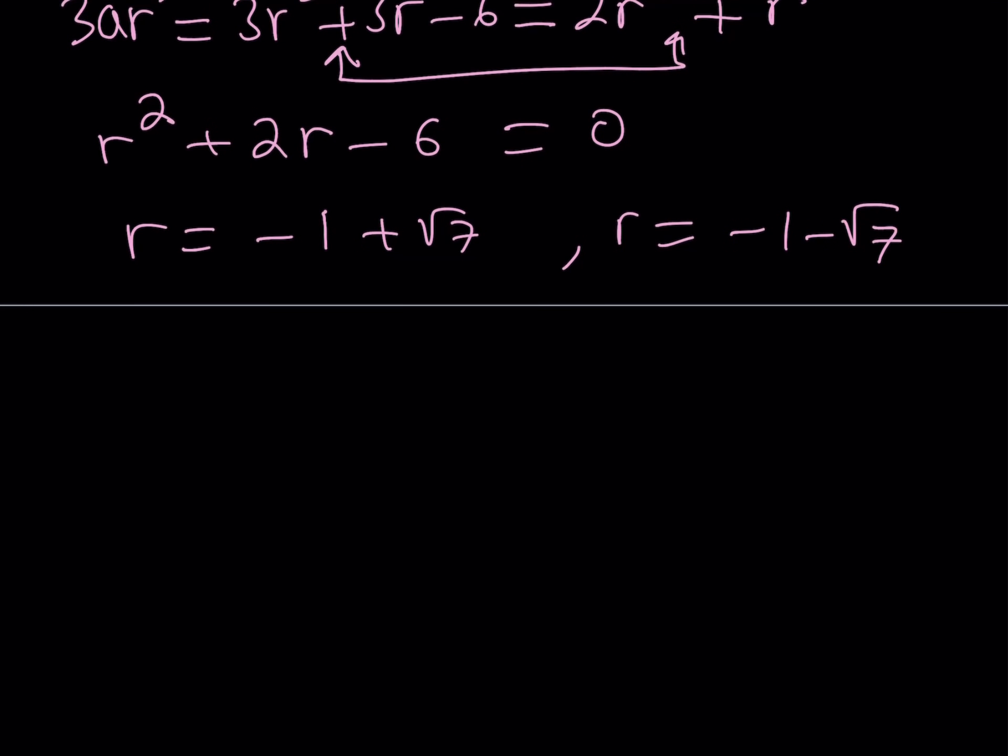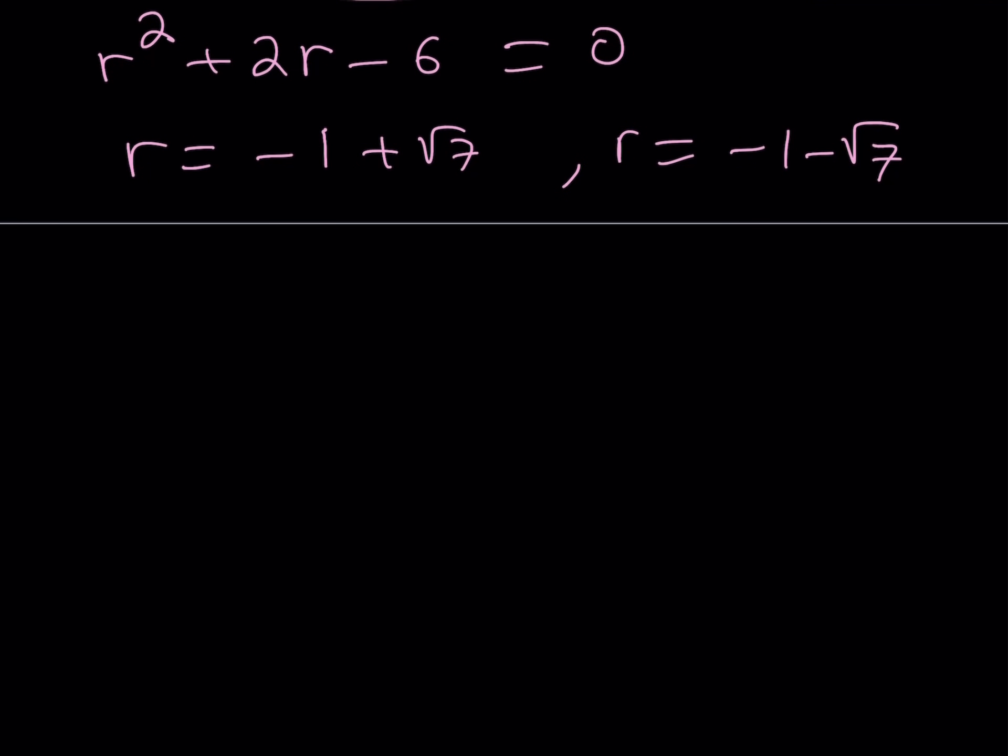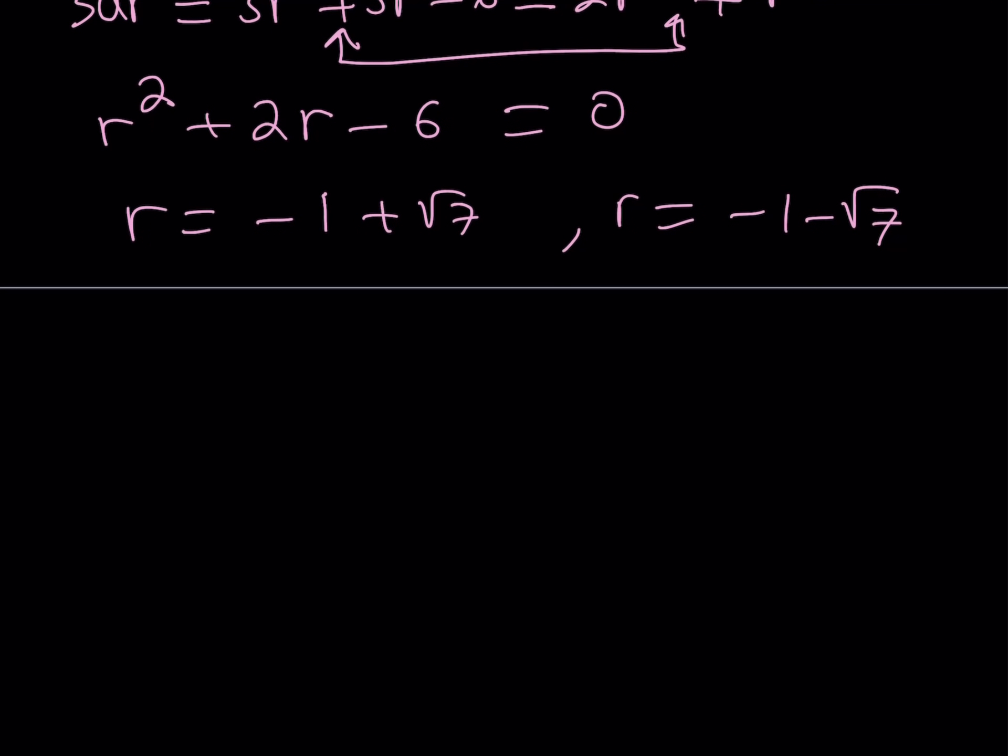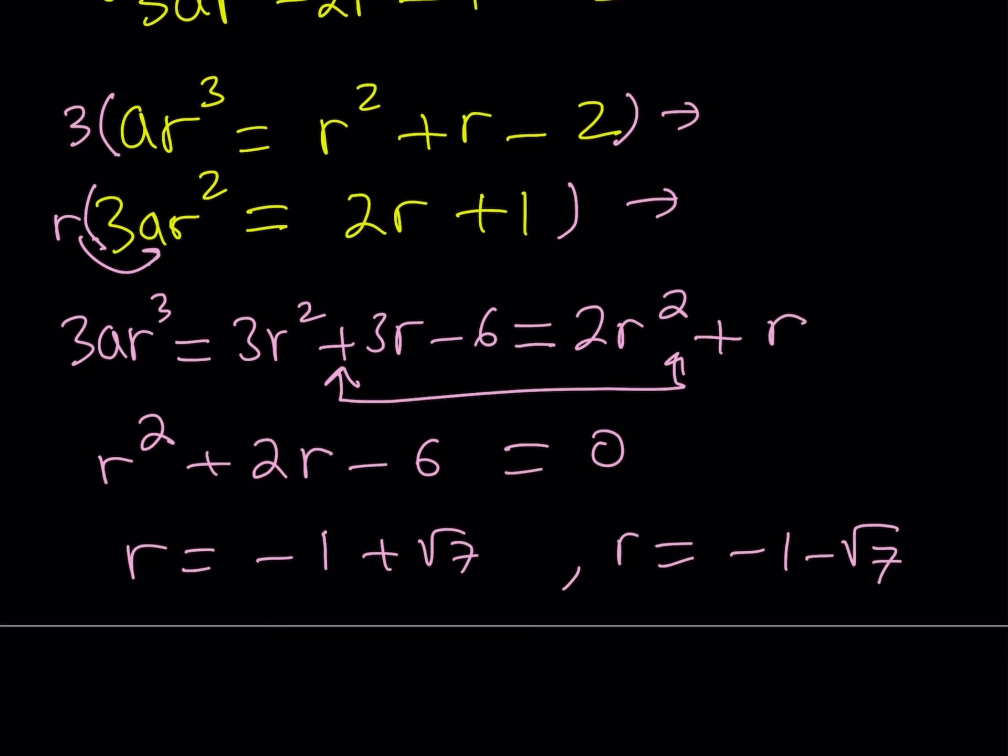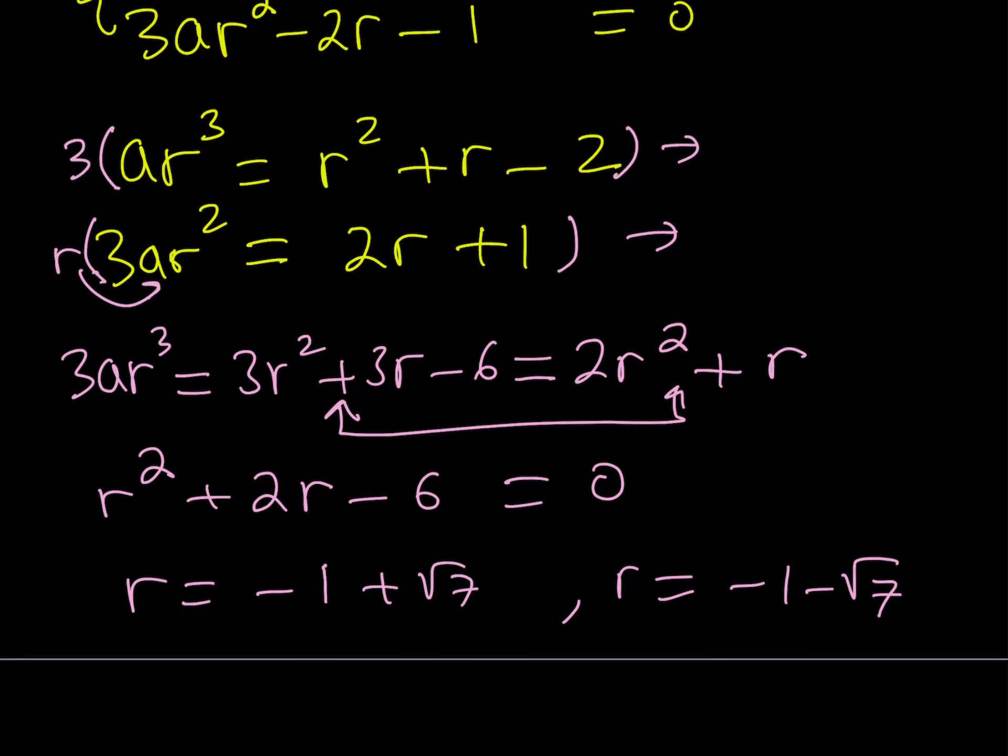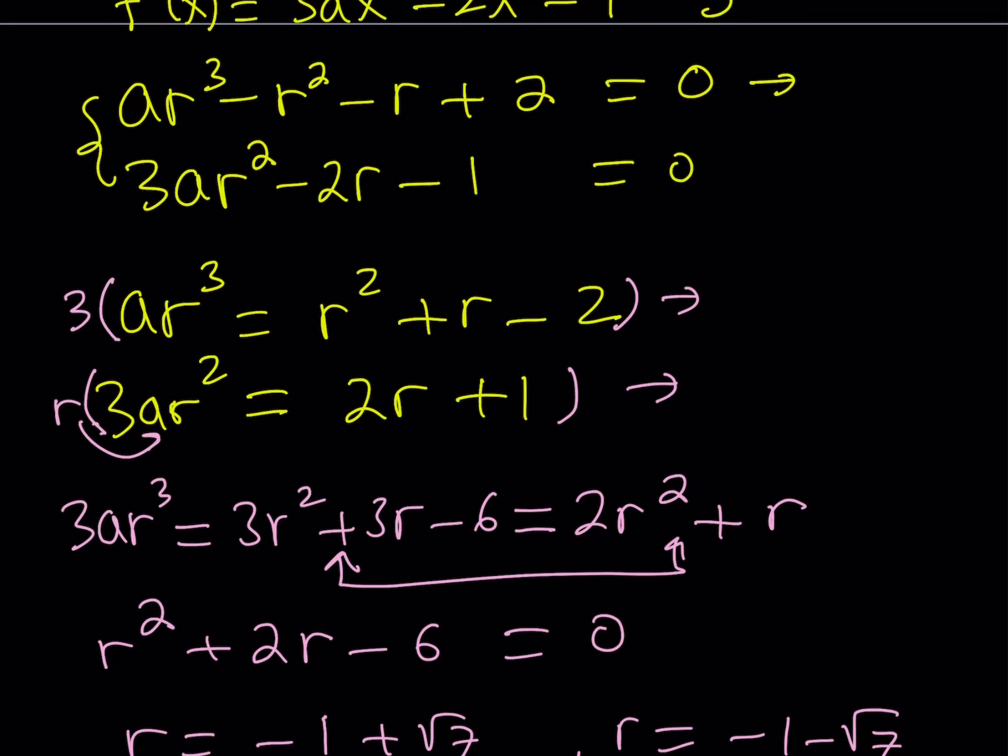We could also use what's known as the Poussin-Lowe method. Maybe we'll talk about that later. Okay, so these are the r values though. I don't need r, I need the a values, right? I'm supposed to find a. But I can find it because we have an equation that relates a and r.